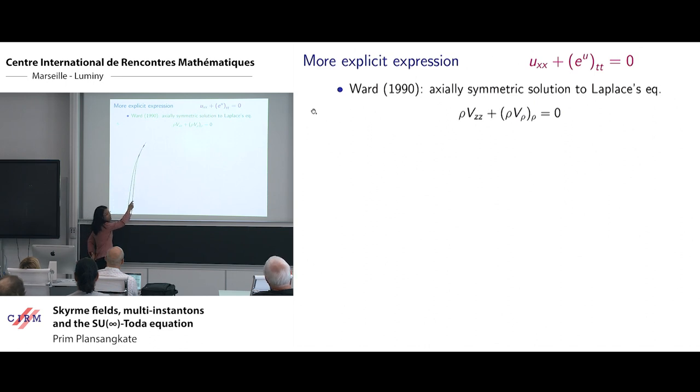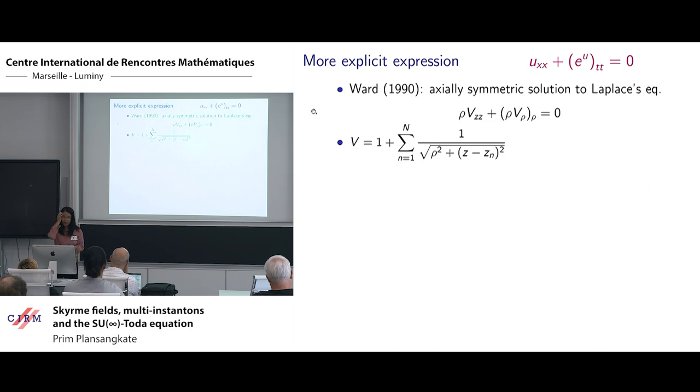In his paper, he gave a prescription of how one can obtain such a solution from axially symmetric solution to the Laplace equation. We have our harmonic function, which determined the Taub-NUT. With this V and using Ward's procedure, it turns out now that we can get explicit expression for U for the Taub-NUT case.